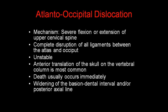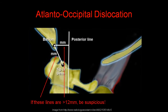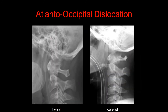Atlanto-occipital dislocation is caused by severe flexion or extension of the upper cervical spine. It results in complete disruption of all the ligaments between the atlas and the occiput. It is highly unstable. The anterior translation of the skull on the vertebral column is the most common pattern. Death usually occurs immediately, and there is usually widening of the basion-dental interval and/or the posterior axial line. If these are greater than 12 mm, dislocation should be suspected. Here we see an example where the entire head is dislocated anteriorly in relation to the C1-C2 vertebral bodies.